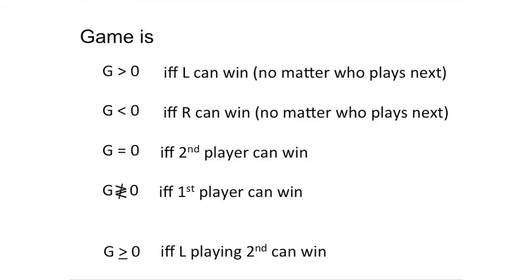For example, if G is a game in which left going second can win, that is equivalent to stating that G is greater than or equal to zero. If G is greater than zero, he wins because he is left. Or if G equals zero, he wins because he is going second.